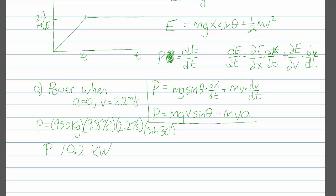So 10.2 kilowatts is the amount of power that the winch has to provide just to lift the ore cart at that constant velocity versus gravity.